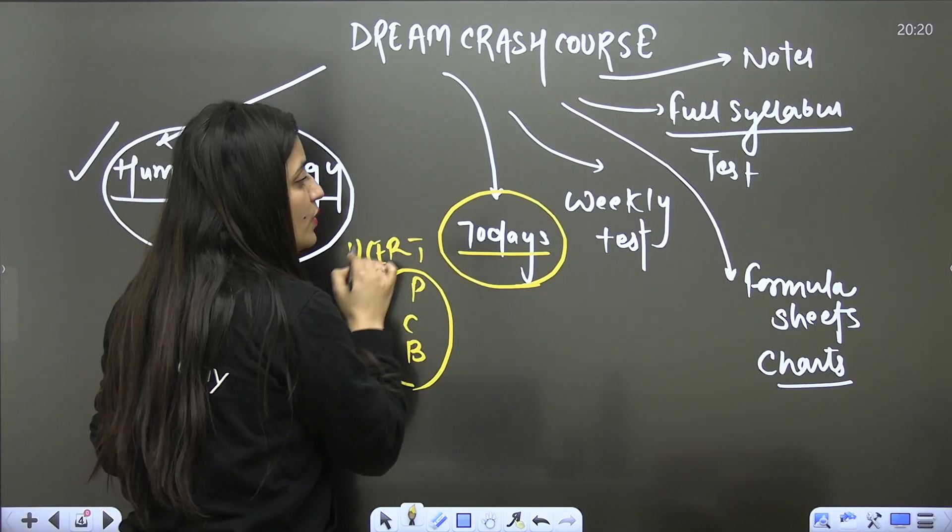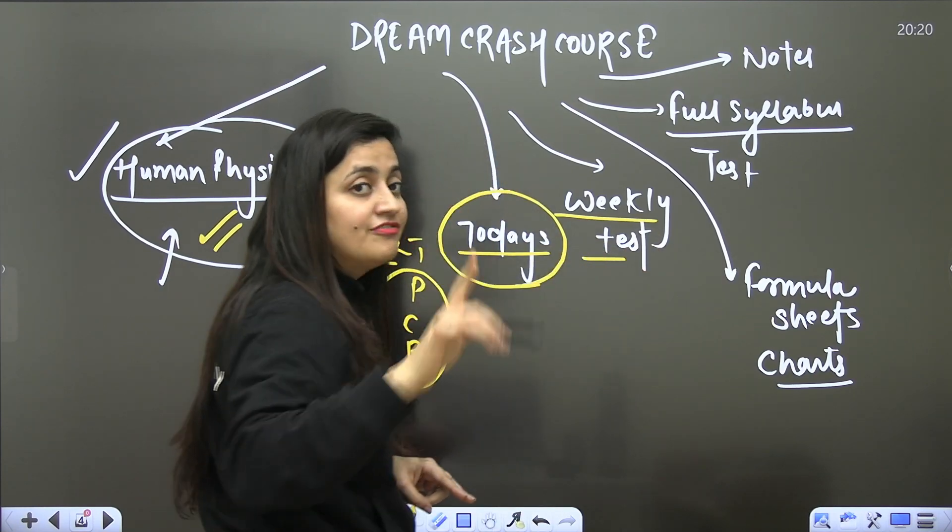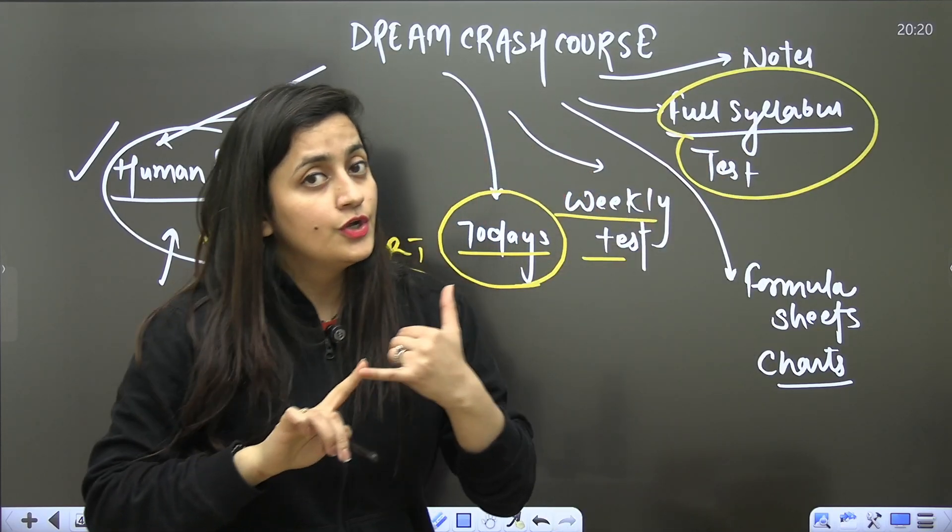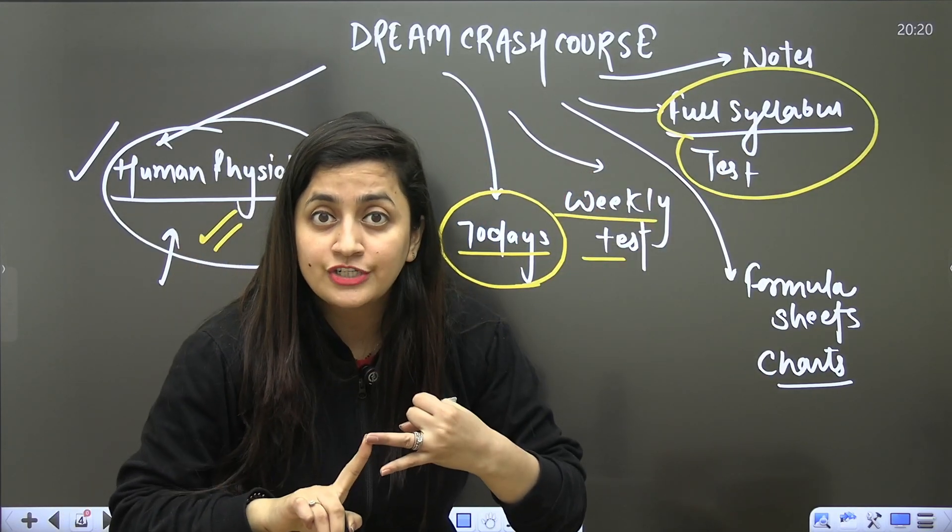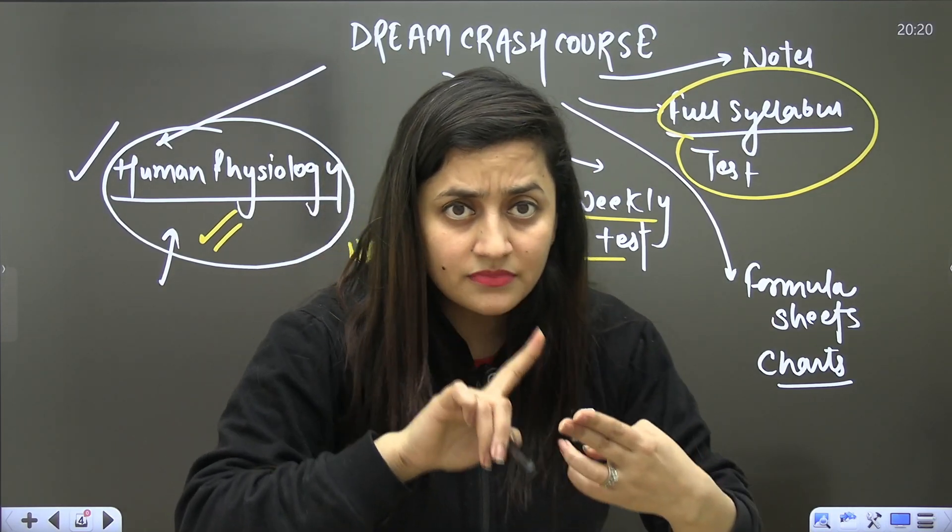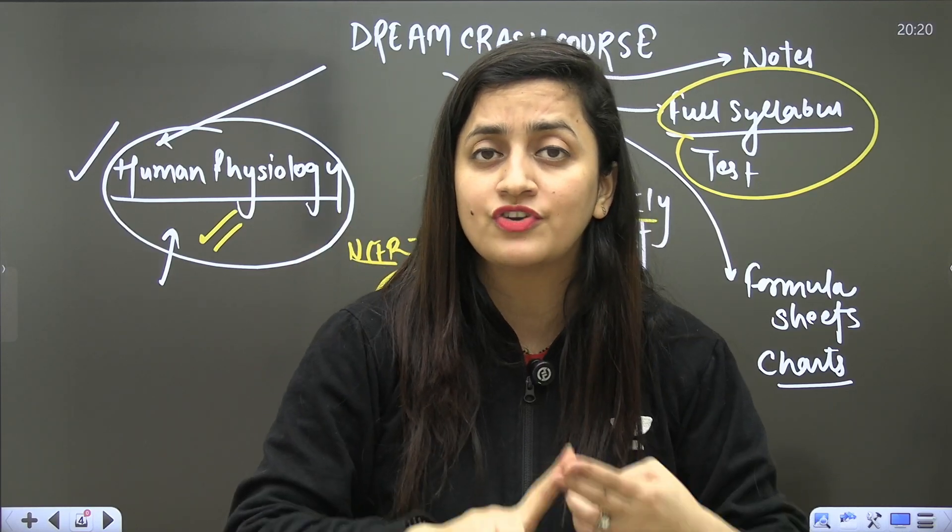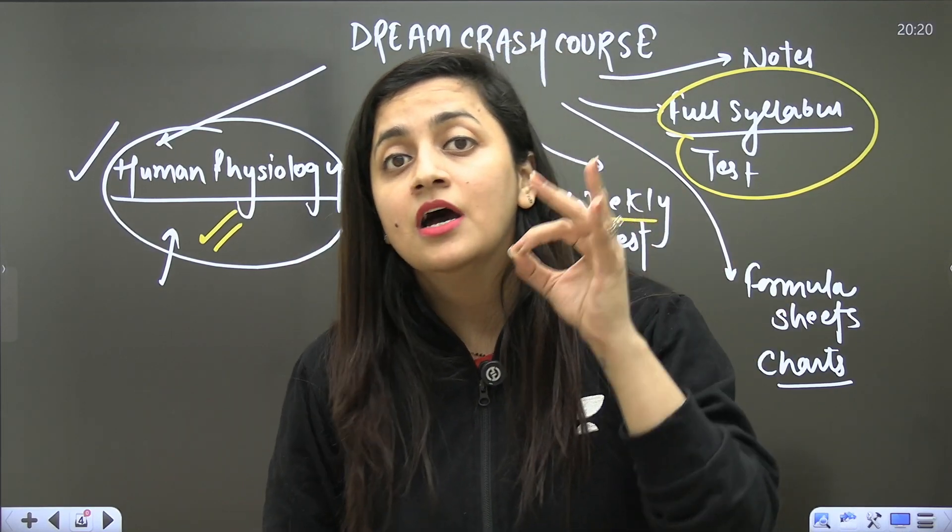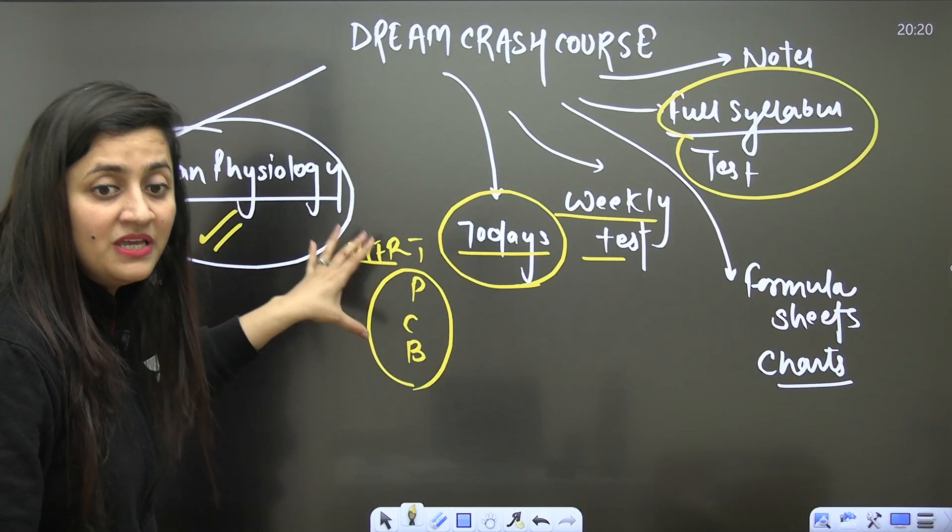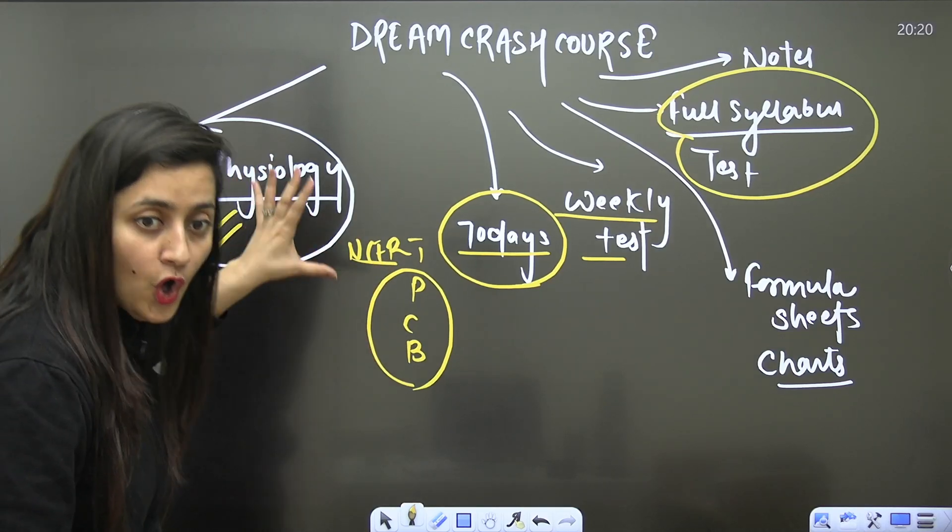Then here we will finish the syllabus in 70 days - the complete syllabus of physics, chemistry, and biology. Let me tell you, your NCERT definitely will be covered. Every week you guys are going to get tests, and after the completion of your syllabus, full syllabus tests will be provided to you. Notes, you people will get, formula sheets you guys are going to get, along with flowcharts for the organic, formula sheets for the physics, chemistry - everything will be provided to you.